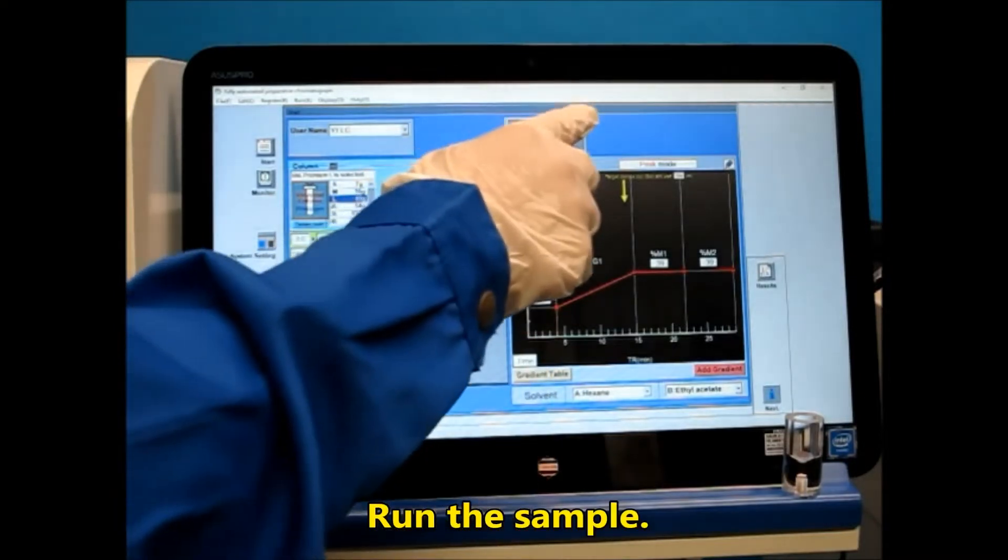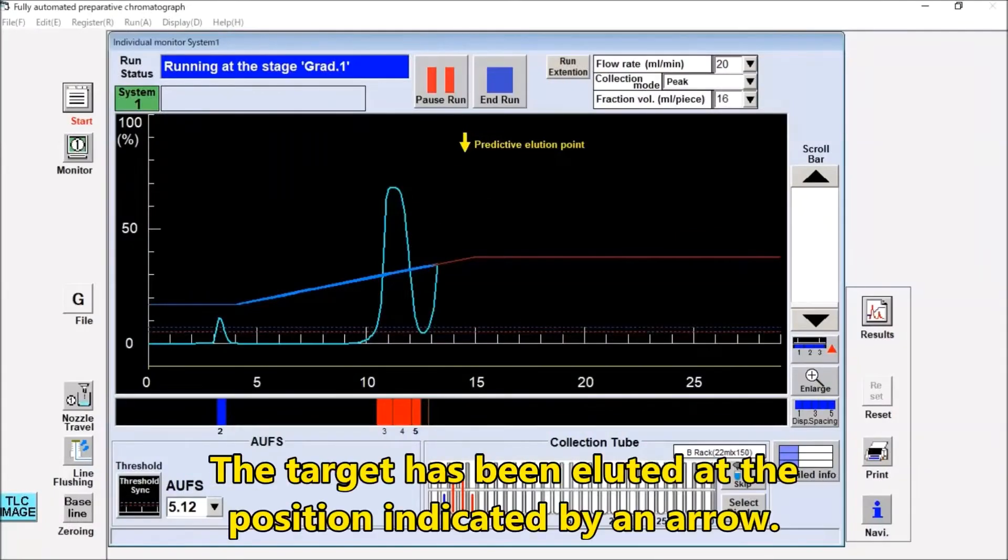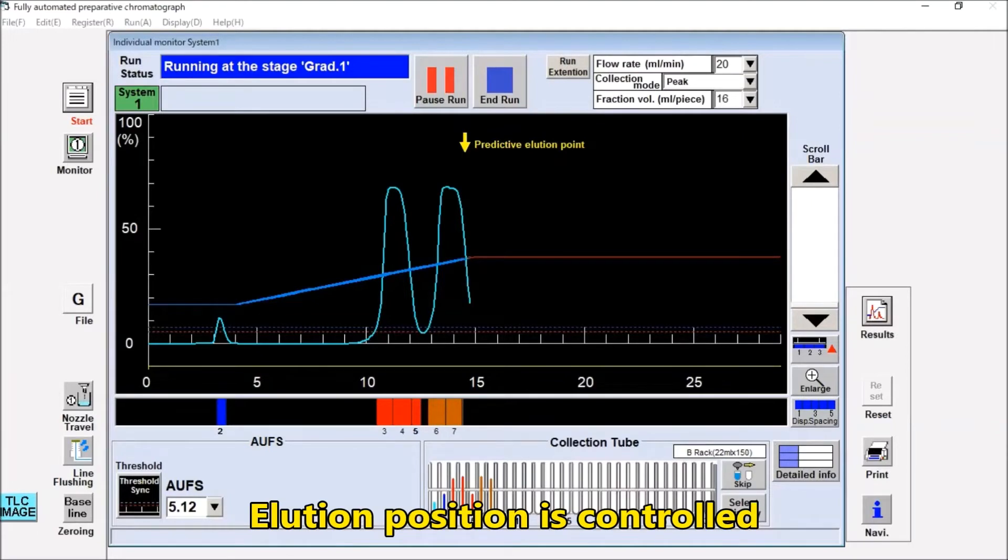With this simple operation, chemists can easily conduct optimal flash chromatography. Here, you can see that the target is being eluted at the position indicated by the arrow. And thus, elution position is controlled. To get such great results,